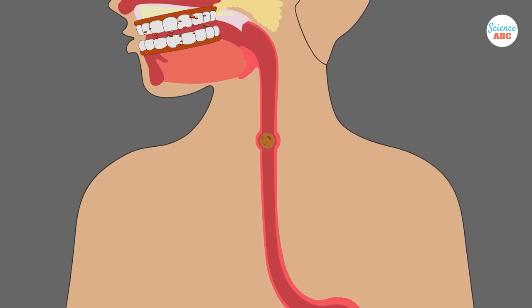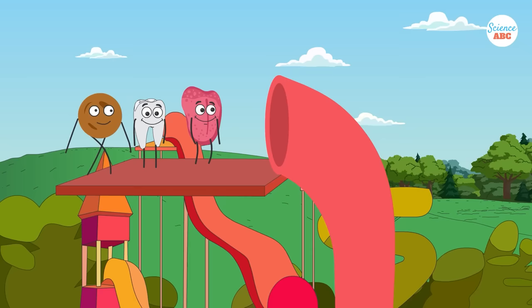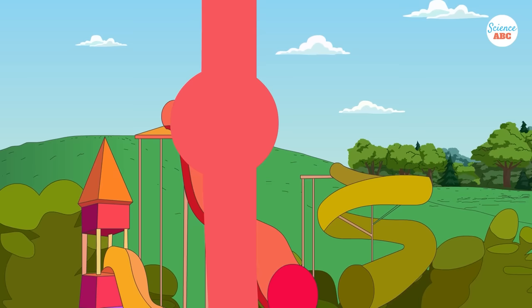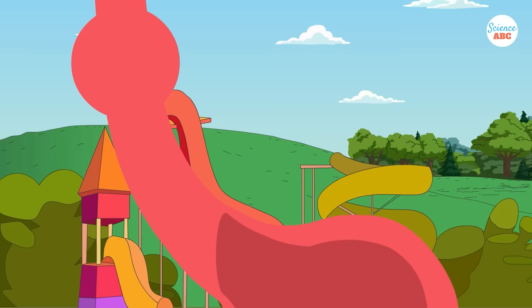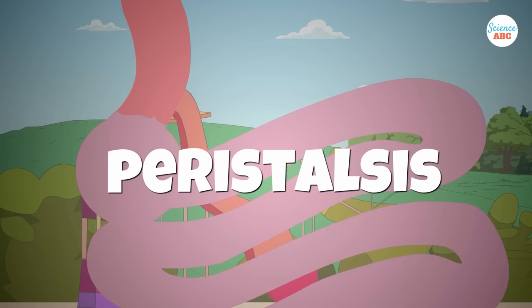We swallow the bolus, which travels down our food pipe, or esophagus, to the pouch of acid we know as our stomach. The esophagus pushes the bolus via involuntary smooth muscle movements. The muscles contract and relax, similar to how a slug or caterpillar moves by contracting its whole body, pushing the bolus down into the stomach. This muscle movement happens throughout the gut and is formally called peristalsis.